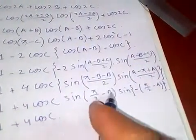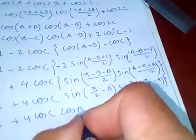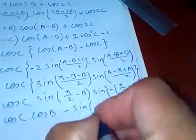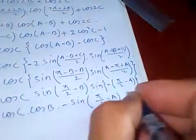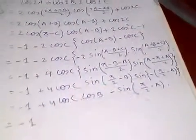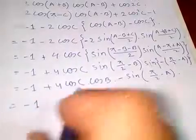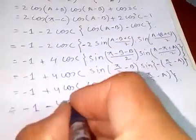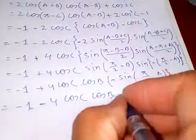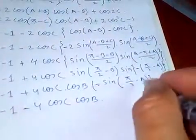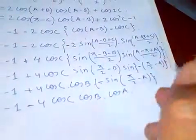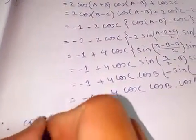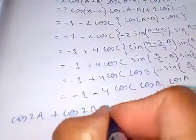We know that sin(90° - x) = cos(x), and sin(-x) = -sin(x). Applying these identities, sin(π/2 - B) = cosB and sin(π/2 - A) = cosA. The minus signs combine so that we get minus 1 minus 4cosA·cosB·cosC. Therefore cos2A + cos2B + cos2C = -1 - 4cosA·cosB·cosC.